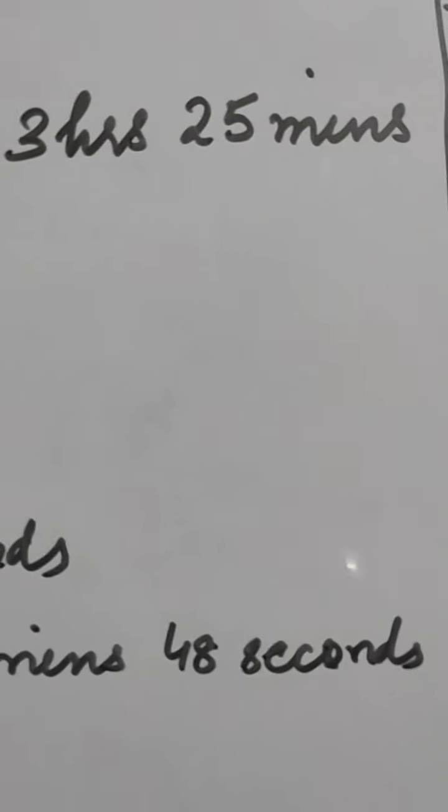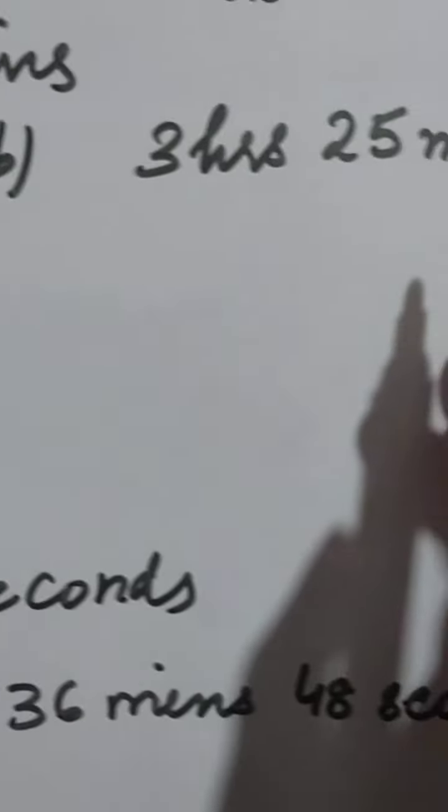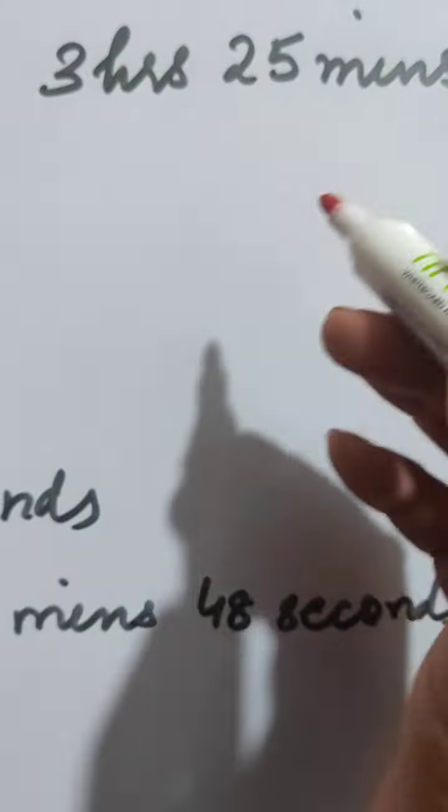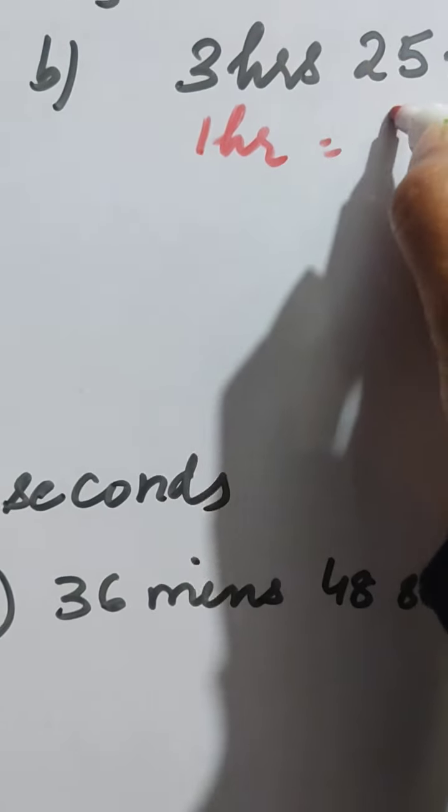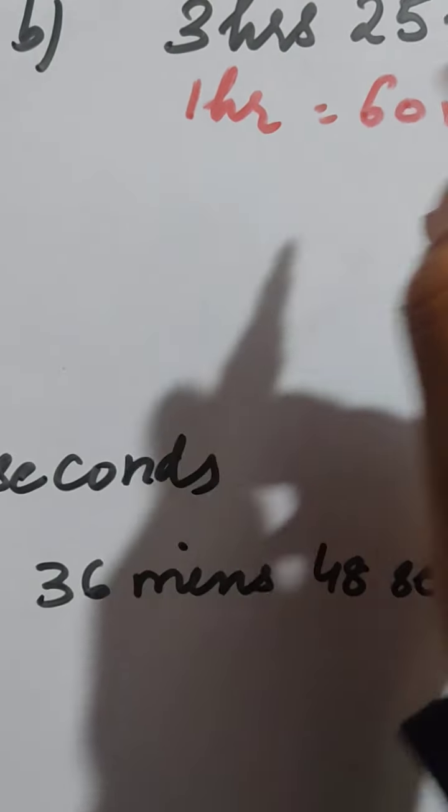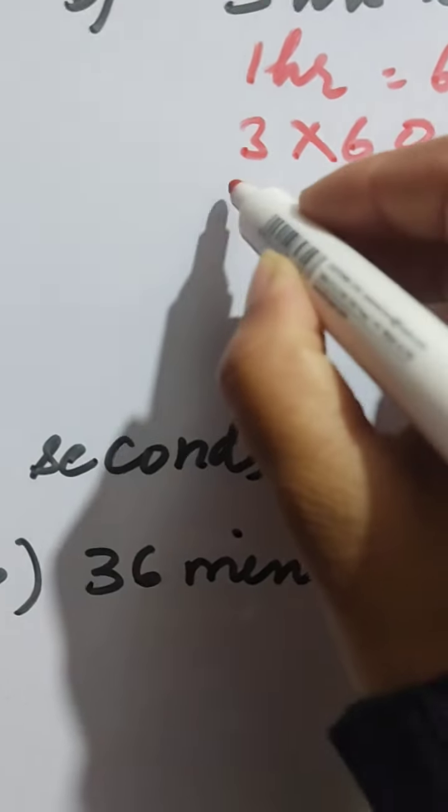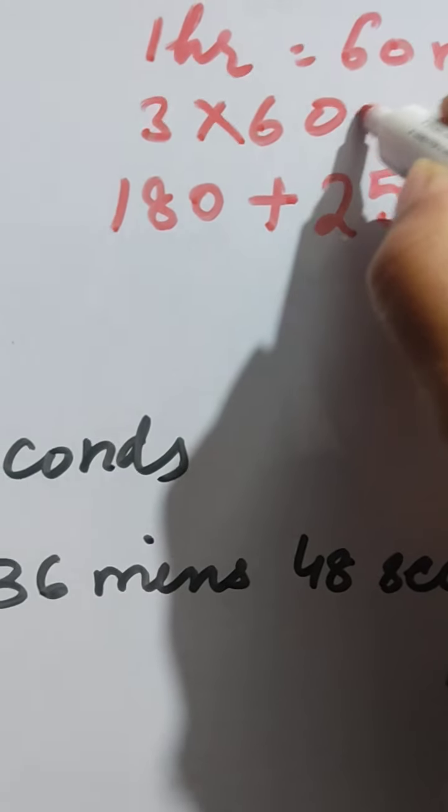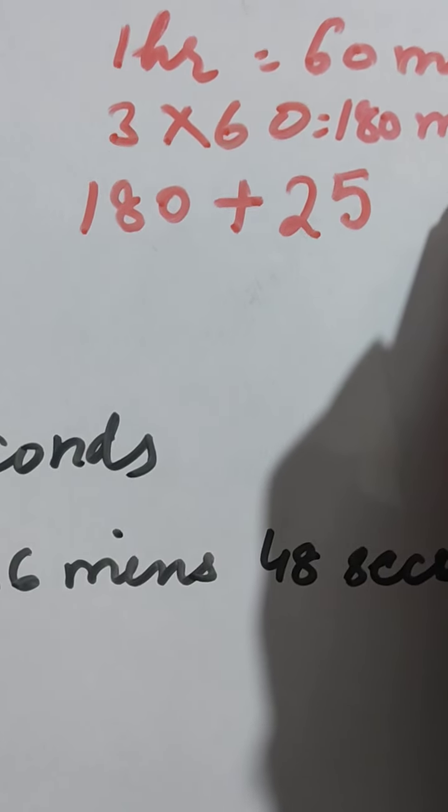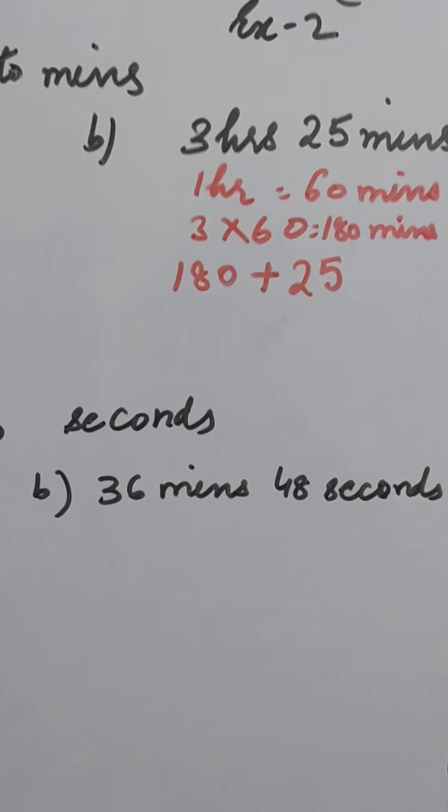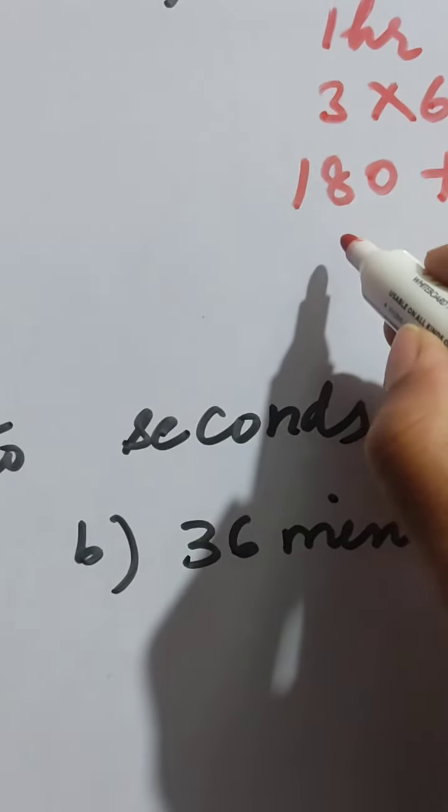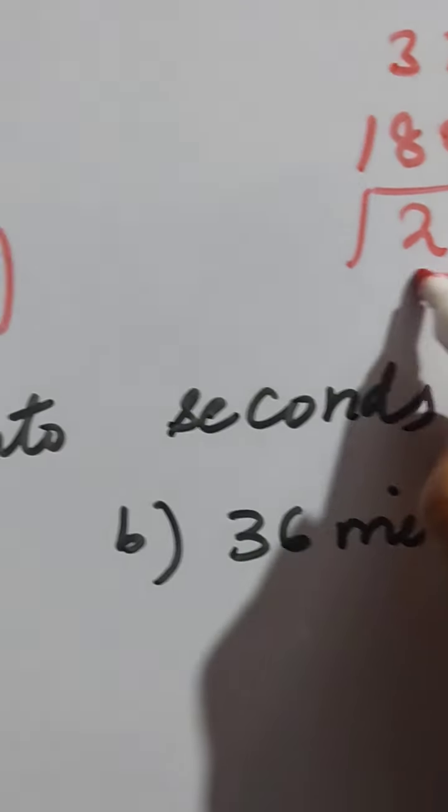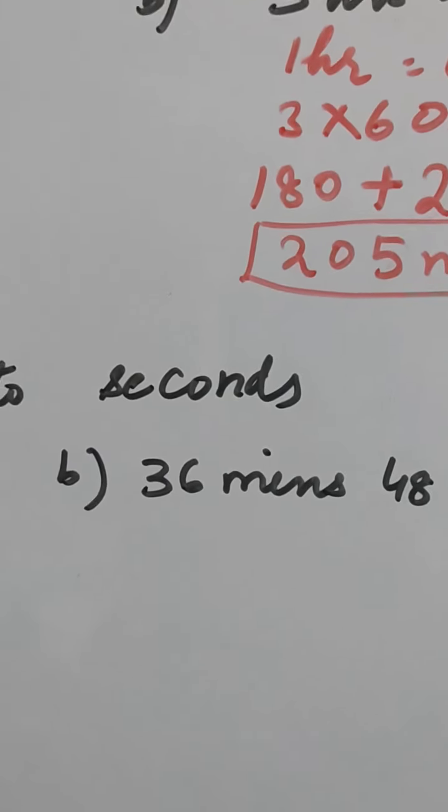Now, we have 3 hours 25 minutes. This is hours and this is minutes. We are going to convert hours into minutes and the minutes that we get, we will add to the existing minutes. So 3 multiply by 60 gives you 180. Now 180 minutes, so we are going to add this 25. When you add them you get 205 minutes. This is your final answer.